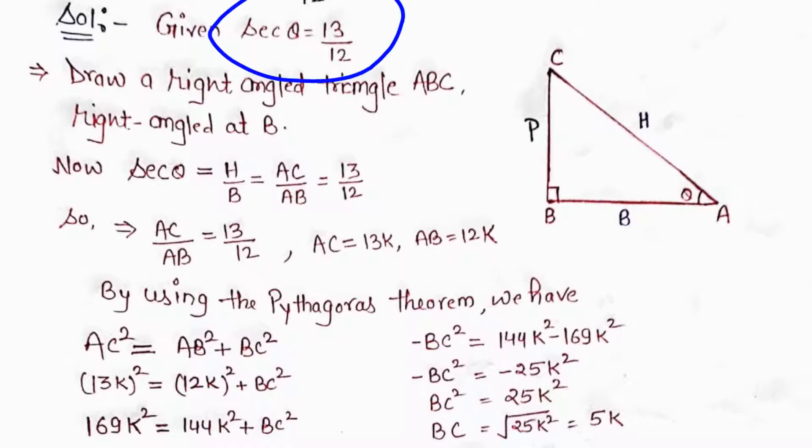Now sec θ = H/B, which means AC/AB. Given AC/AB = 13/12. Using the property of proportions, we can write AC = 13K and AB = 12K, where K is a constant.